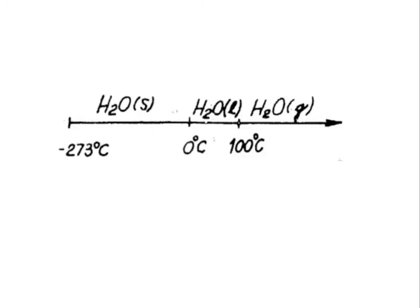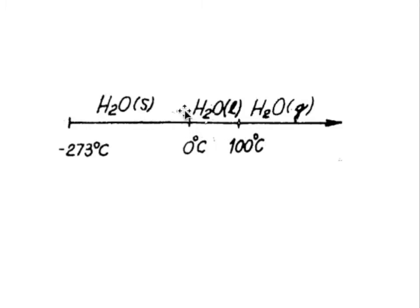Here we see the one-component system for water. It is a line going from absolute zero temperature up to higher temperatures, showing the shape water exists in at certain temperature intervals. From absolute zero up to 0°C, water is solid — that is ice. From 0°C up to 100°C it is liquid, ordinary water. And from 100°C upwards it is a gas, water vapor. So water exists as different phases — solid, liquid, and gas — at different temperatures. This is what you can read from a one-component phase diagram, valid at a pressure of one atmosphere.